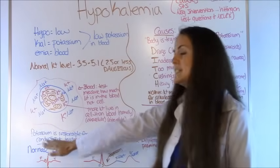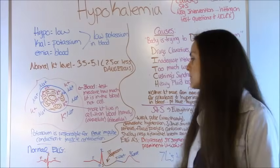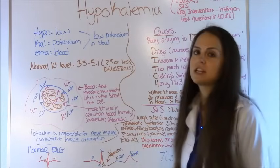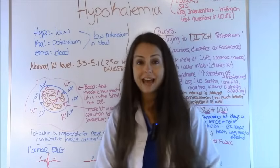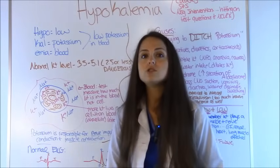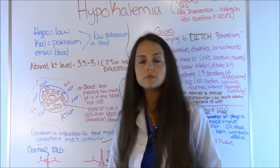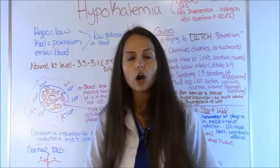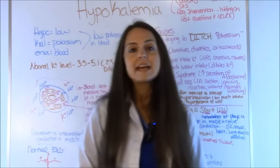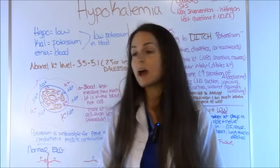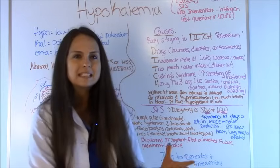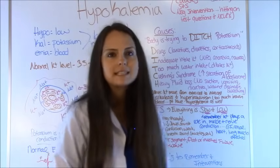Now remember, potassium is responsible for nerve impulse conduction and muscle contraction. And if you don't have a lot of potassium in your blood for your cells to use, you start getting problems with your GI system, your heart, and everything doesn't want to work appropriately. Understanding that will help you understand why you're getting these signs and symptoms whenever you have low potassium in the blood.